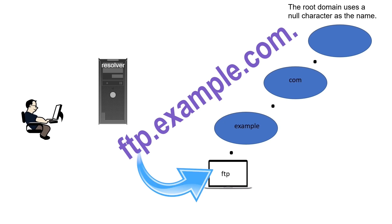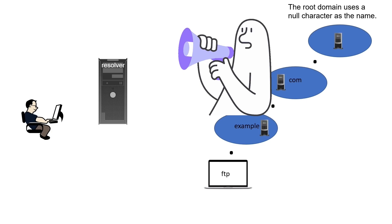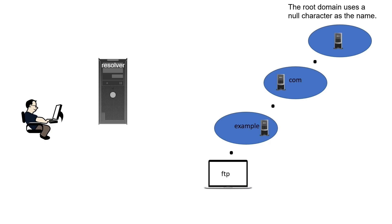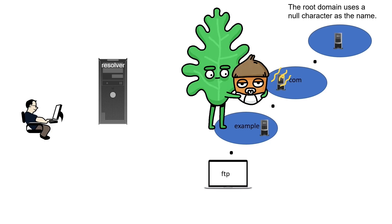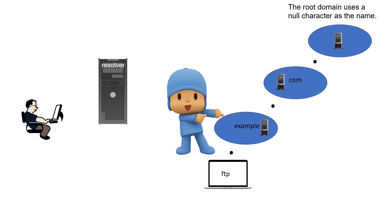In a fully qualified domain name example: FTP is the resource name, it is the child of the example domain, the example domain is the child of the com domain, and the com domain is the child of the root domain. Each domain uses an authoritative name server to resolve queries for resources available inside it. If it has a child domain, it does not resolve queries for the child domain — it provides a referral to the child domain's authoritative name server.